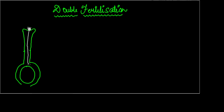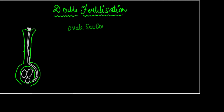In the ovary there are many, many ovules. If we take a cross-section of an ovule, we can see the internal structure of an ovule.